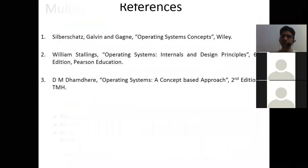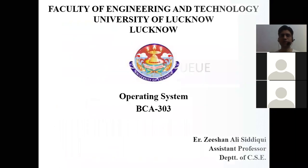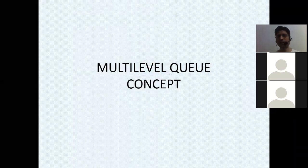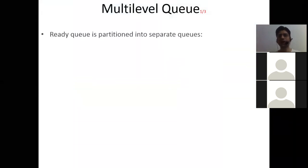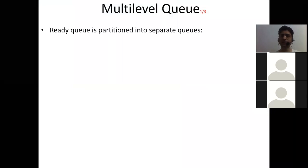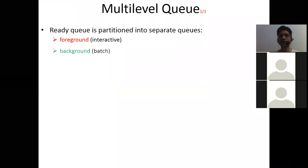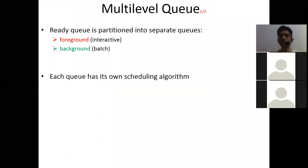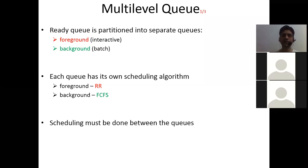In multi-level queue: a ready queue is partitioned into separate queues — two bifurcations: foreground (interactive process) and background (batch process). Each queue has its own scheduling algorithm — for foreground we apply round-robin, and in background we have first-come-first-serve. Now scheduling must be done between the queues — how to schedule between these foreground and background queues. The first idea was a rigid fixed priority scheduling: firstly serve all foreground processes, then go for background. Again, there is an issue of starvation.